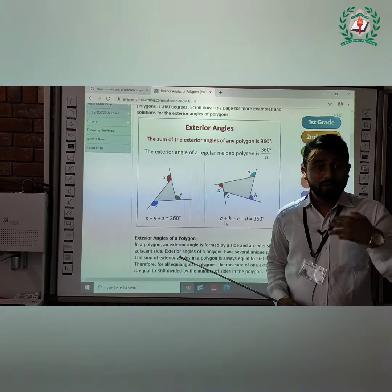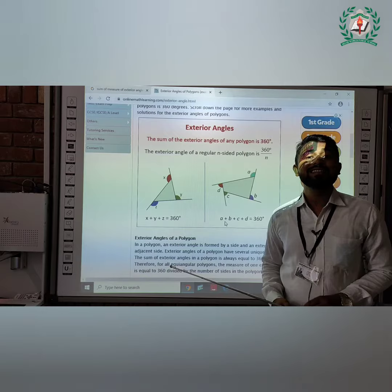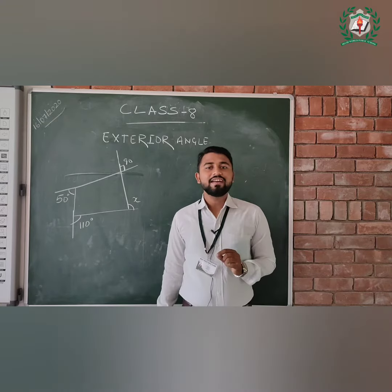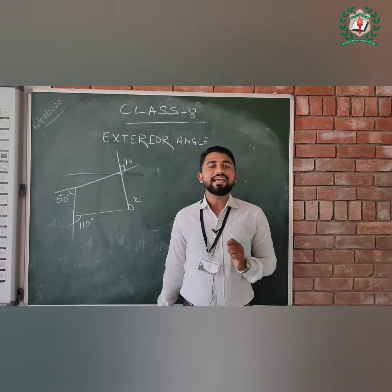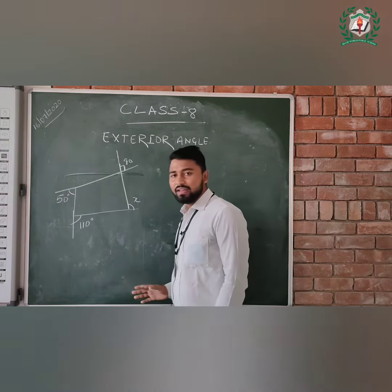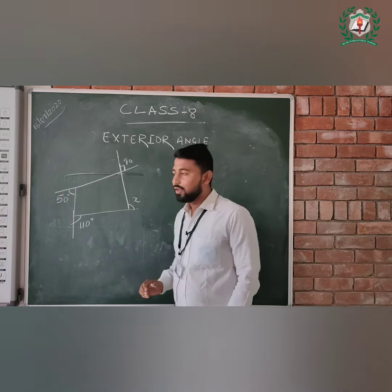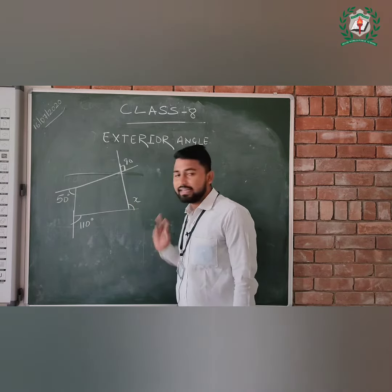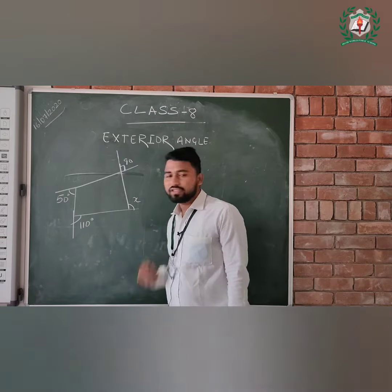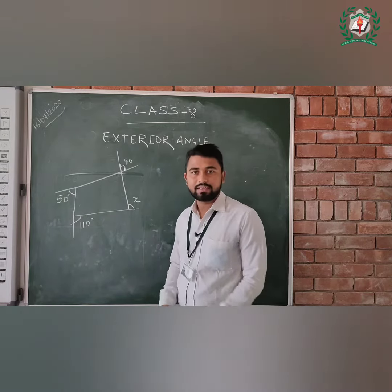Now I am going to take one practical example of exterior angles. Here is a polygon. All the exterior angles have been given. The first angle is 90, the second is x, the third is 110, and the fourth is 50. We have to find the value of x.